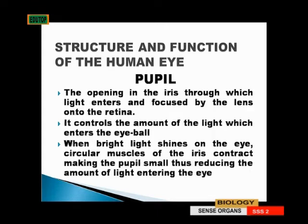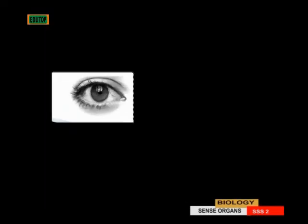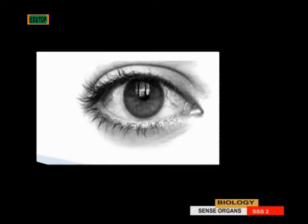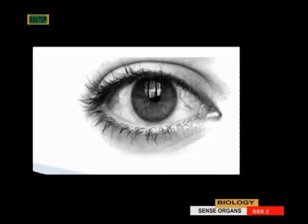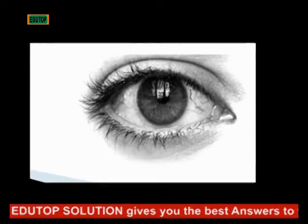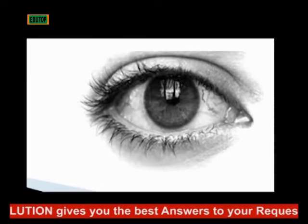The pupil is the opening in the iris through which light enters and is focused by the lens onto the retina. It controls the amount of light which enters the eyeball. When bright light shines into the eye, the circular muscles of the iris contract, making the pupil small, thus reducing the amount of light that enters the eye.